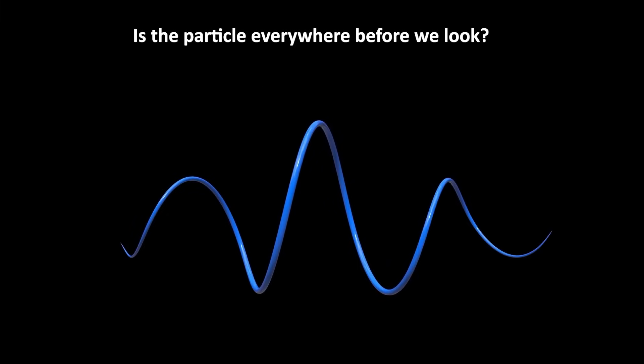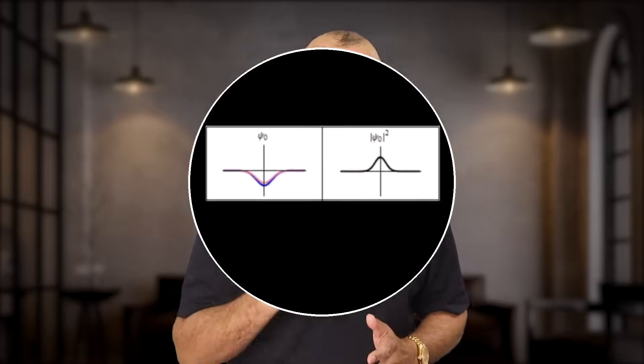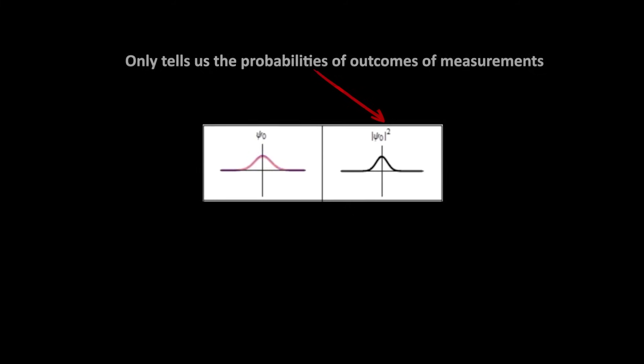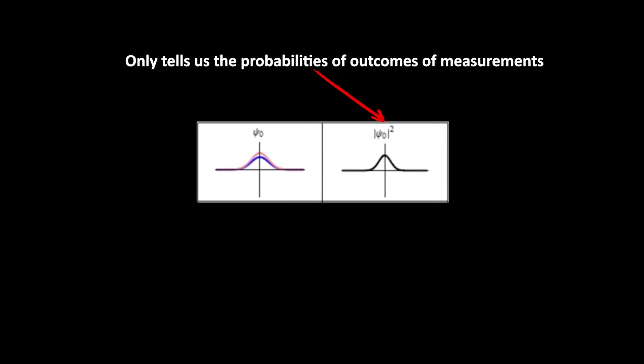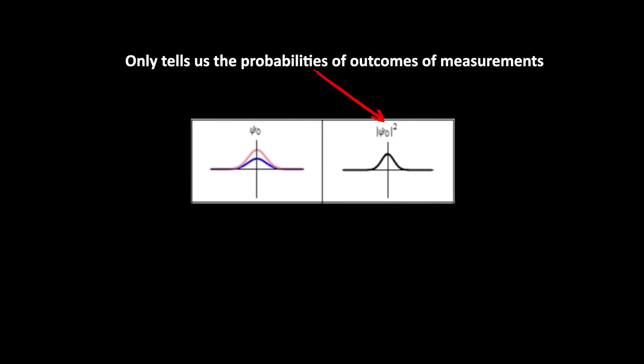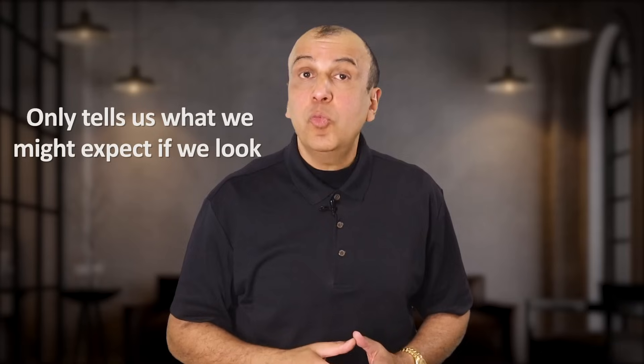It's often said that the wave function implies that until we look, the particle is everywhere, or at least it's smeared out. But that's not really right, because Born's rule doesn't mean that. Born's rule is only about the probabilities of the outcomes of measurements. This mathematical machinery tells us not what the quantum world is like, but only what we'll see if we measure it. So the idea that before we measure it, the particle is everywhere is not quite correct. It doesn't tell us what is. It only tells us what we might expect if we look.